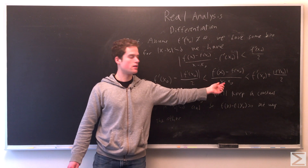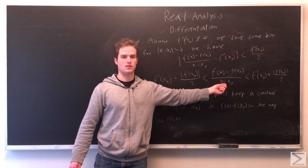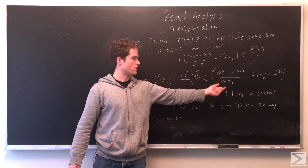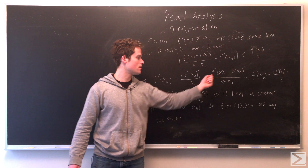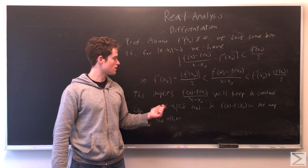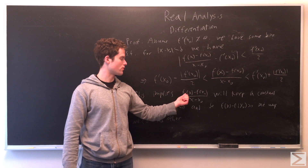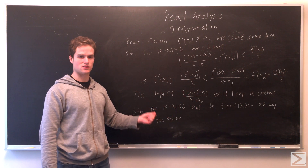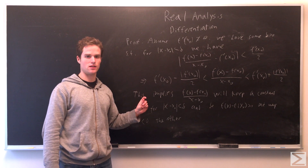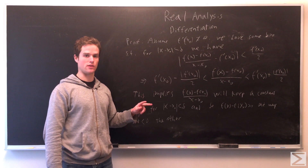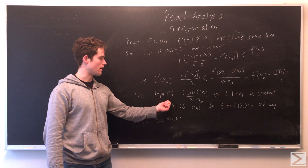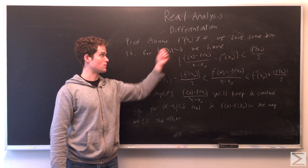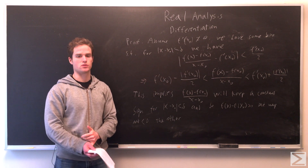If this fraction has constant sign, then when x minus x₀ is positive the fraction has one sign, and when x minus x₀ is negative it has the opposite sign. So there is one direction in which f(x) minus f(x₀) is greater than zero, and one direction in which it is less than zero. But this contradicts there being a maximum or minimum at x₀, because we can find points both greater than and less than f(x₀). Therefore our assumption that f prime(x₀) does not equal zero must be false, and so f prime(x₀) has to equal zero.